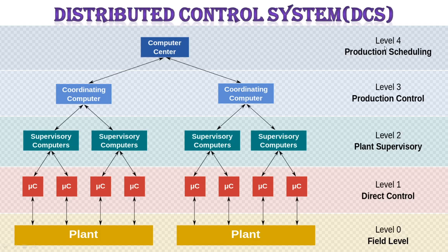The hierarchy runs from level 0 to level 4. Level 0 is the field level, then there is the direct control level, the plan supervisory level, the protection control level which includes the coordinating computer, and finally the production scheduling which is done at the computer center.